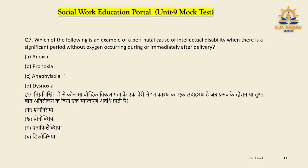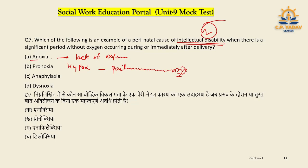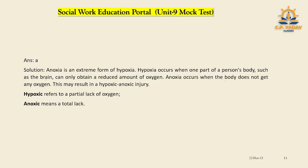So anoxia means lack of oxygen, and hypoxia means partial lack of oxygen — a slight deficiency. This can cause intellectual disability in the brain. Anoxia is the right answer. The speaker also mentions their voice is not well today, so viewers can read the explanation on screen.